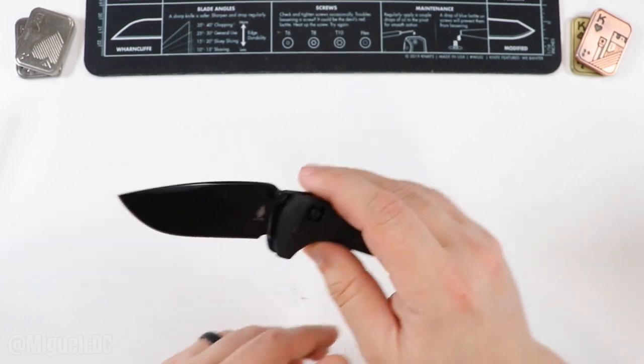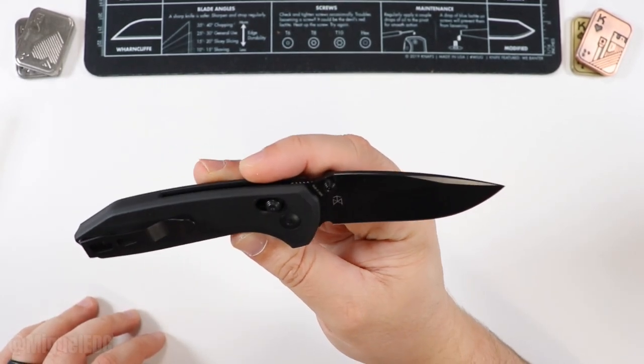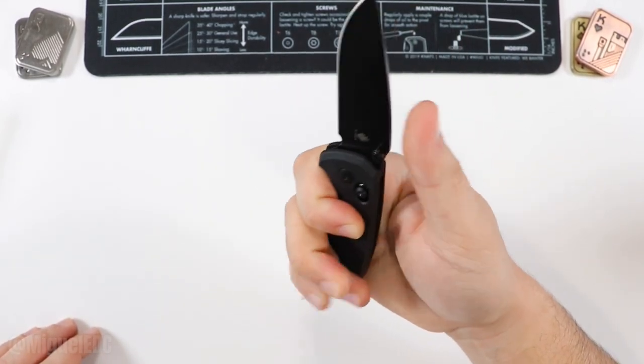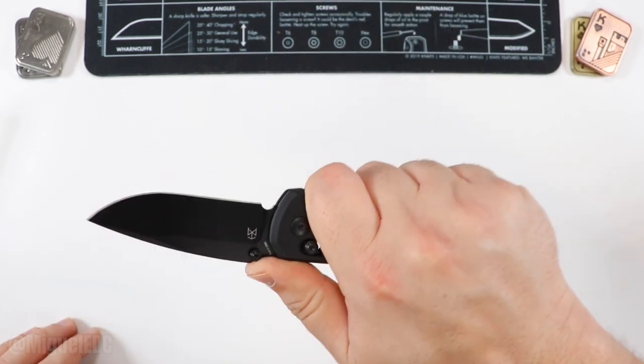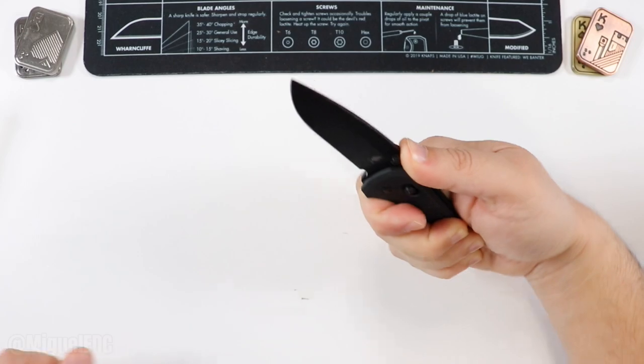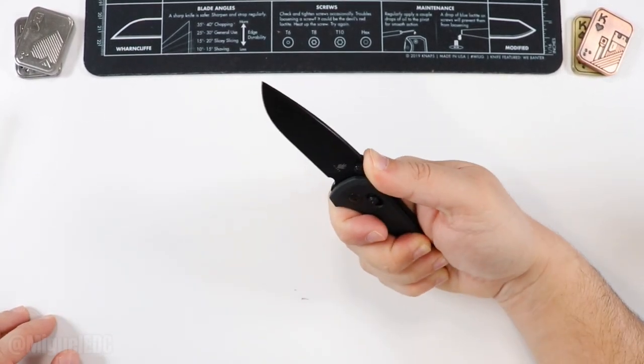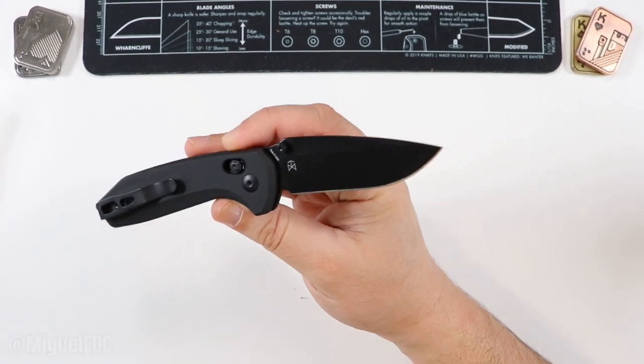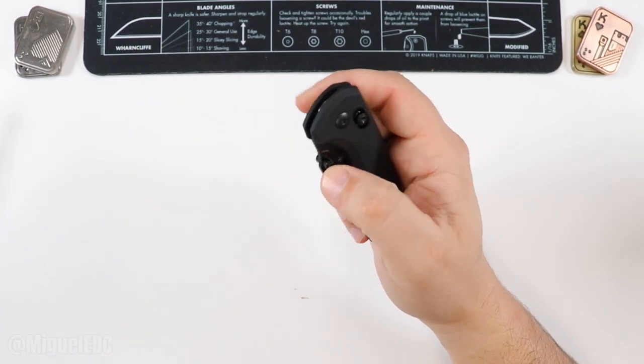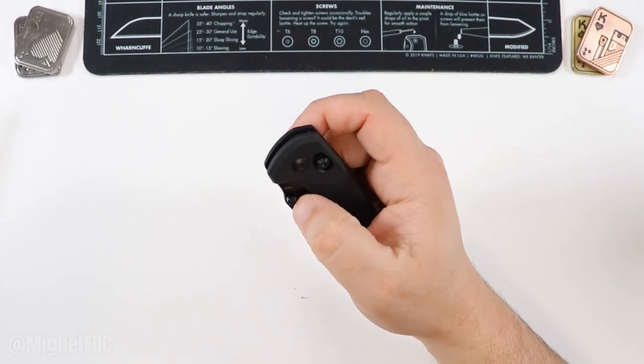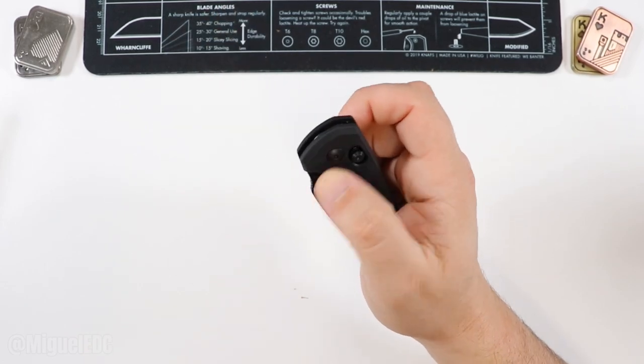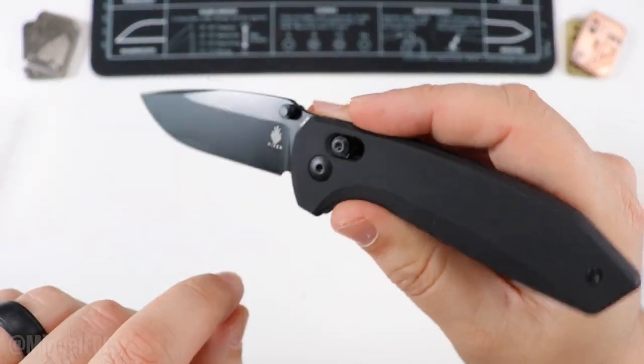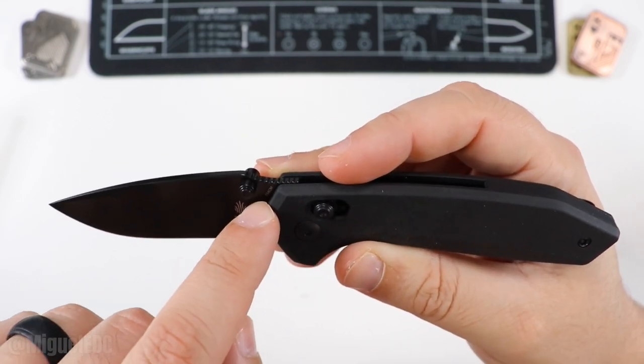As far as the blade, we have a drop point blade with a little bit of belly going on and it does have some jimping right here. Since you only have this one grip position, you can also put your thumb there for additional control when cutting, slicing, sharpening your pencil, peeling an orange, surviving in the wilderness, whatever. 154CM, which is pretty good, a little bit better than things like 14C28N, D2, Nitro V, definitely below things like S30V, S35VN, S45VN and stuff like that.